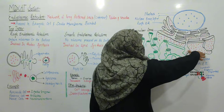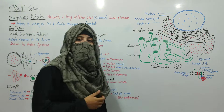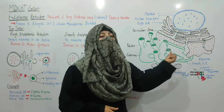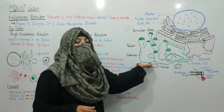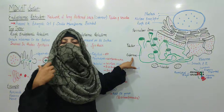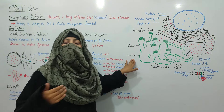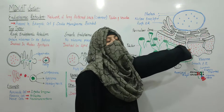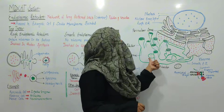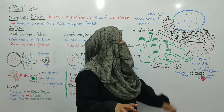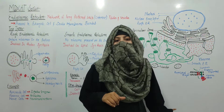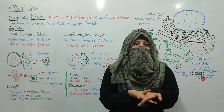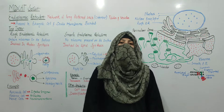Here we have rough endoplasmic reticulum and smooth endoplasmic reticulum. Here you have flattened sacs which we call cisternae — the singular is cisterna. There are vesicles also present. There are ribosomes present on the rough endoplasmic reticulum, but on the smooth endoplasmic reticulum there are no ribosomes. Endoplasmic reticulum is present within eukaryotes.